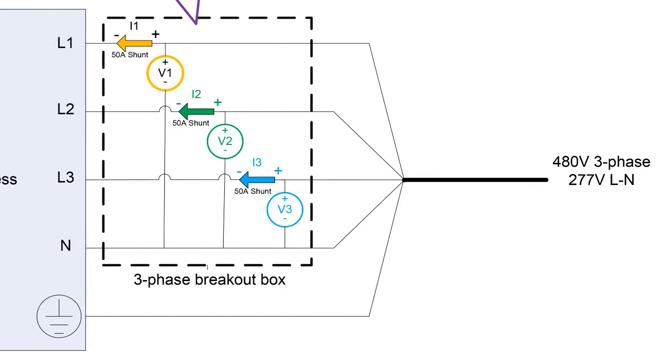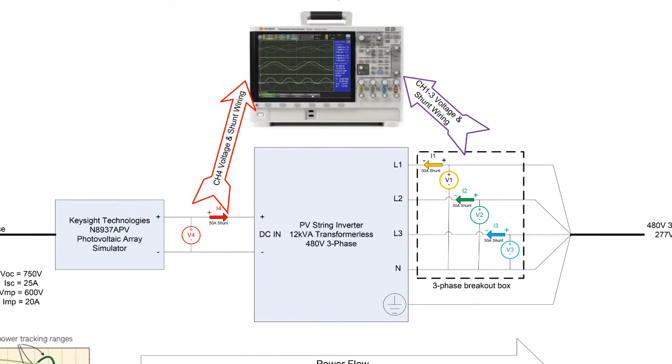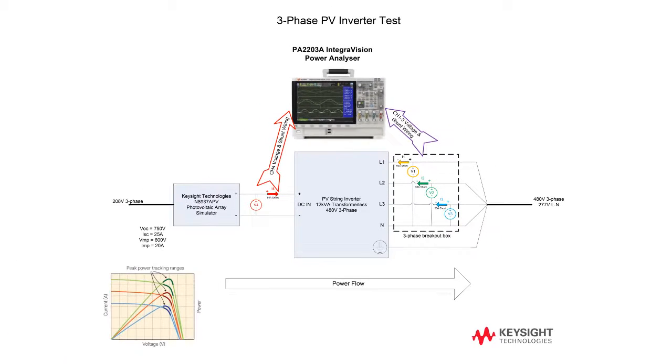The output is connected to 480 volt three-phase and I'll be measuring the output of the inverter using channels one, two, and three on the three phases connected to neutral. On the input I'll be using channel 4 to measure the voltage and current of the DC input to the inverter, and these are wired into the power analyzer. So that's our configuration.